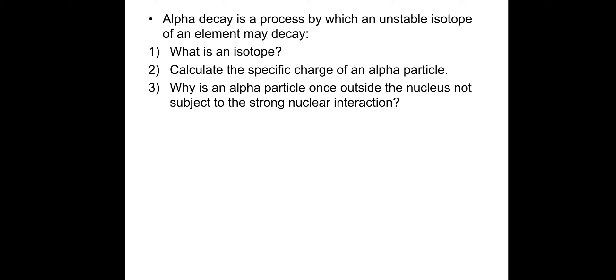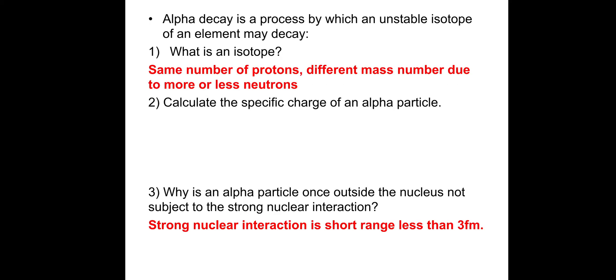So I have a question here that you can have a go at. And then I'll take you through it. So just pause. So alpha decay is a process by which an unstable isotope of an element may decay. So question 1, what is an isotope? Question 2, calculate the specific charge of an alpha particle. That's content from particle physics lesson 1. And number 3, why is an alpha particle, once outside the nucleus, not subject to the strong nuclear interaction? So the first one, same number of protons with a different mass number due to it having more or less neutrons. Number 3, why is an alpha particle, once outside the nucleus, not subject to the strong nuclear interaction? Strong nuclear interaction is short range, less than 3 femtometers. And obviously, if the alpha particle is outside of the nucleus, the distance is much greater than 3 femtometers.